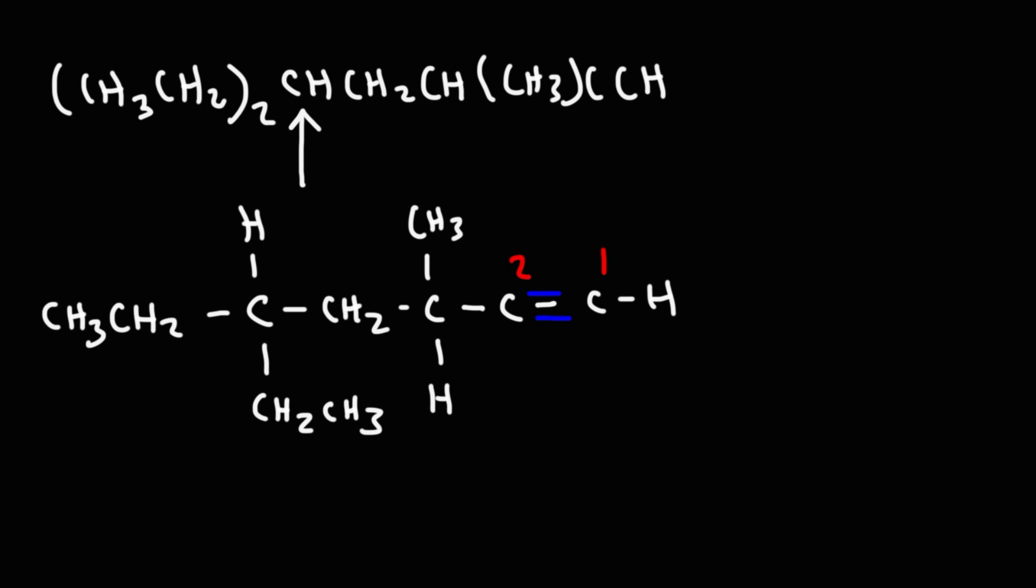So now let's count the longest chain. The longest chain has seven carbon atoms. Two, three, four, five, six, seven. Now when dealing with alkynes, we need to draw a straight structure. Because alkynes tend to be straight. So I'm going to start with this first. So this is carbon one, carbon two, carbon three. And then we're going to bend it. So this is going to be carbon four, carbon five, carbon six, carbon seven.